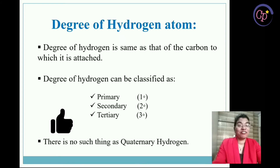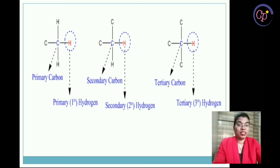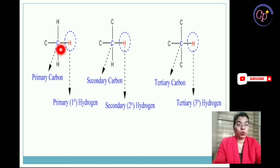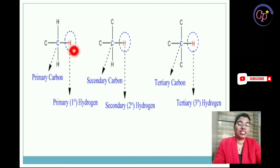There is no such thing as quaternary hydrogen. When you saw the case of carbon there was quaternary carbon, but for the hydrogen atom there is no quaternary hydrogen. In this example, to find the degree of the circled hydrogen atom, you first find the degree of the carbon to which it is attached. That carbon is directly attached to one other carbon atom, so it is showing one degree or primary carbon. Therefore the hydrogen attached to it will also be showing primary hydrogen or one degree.